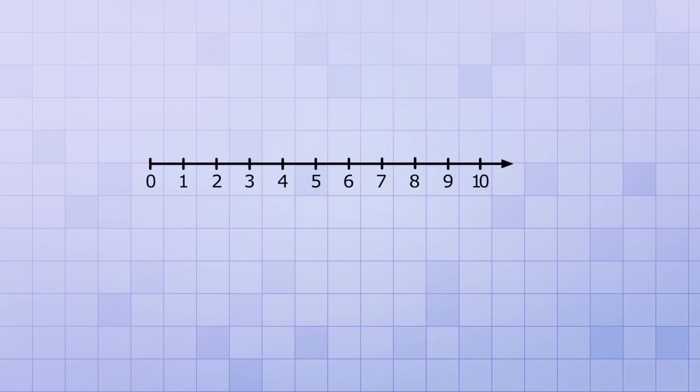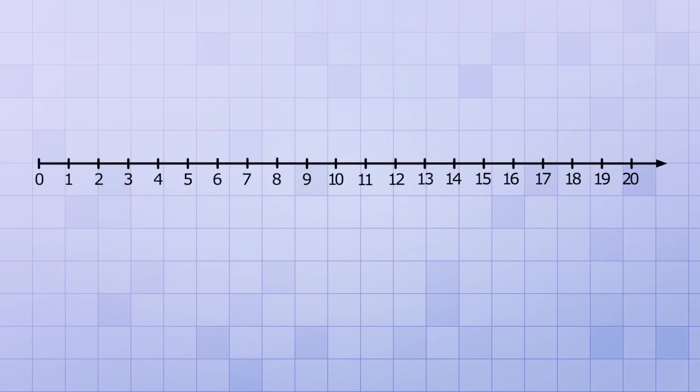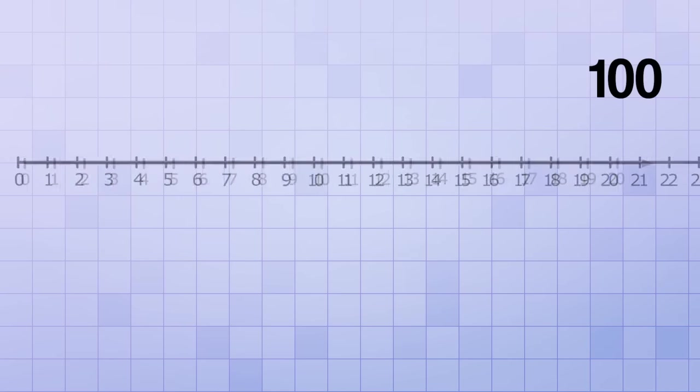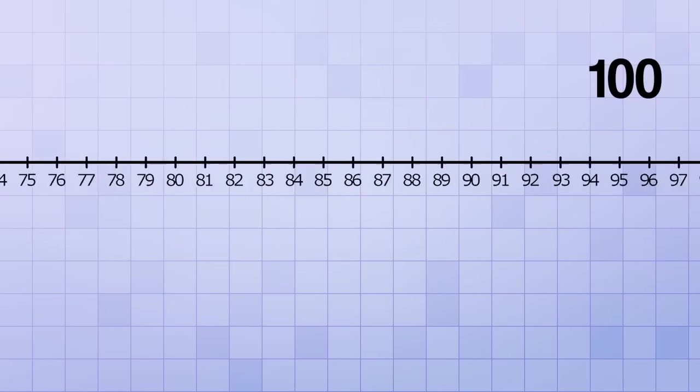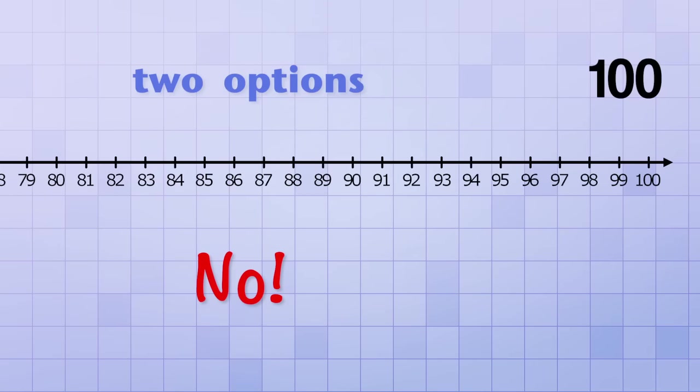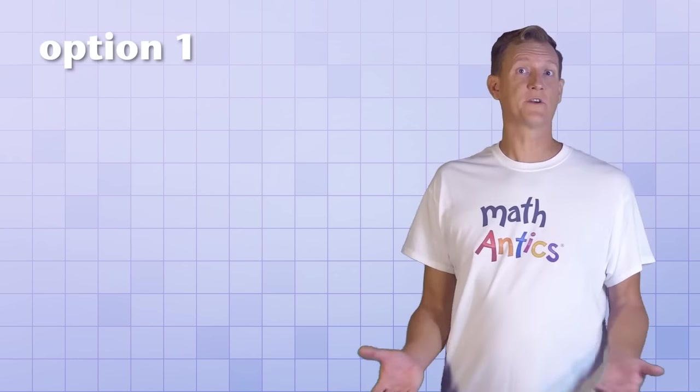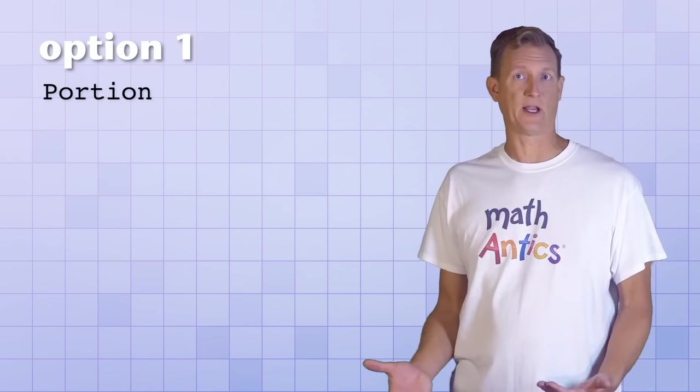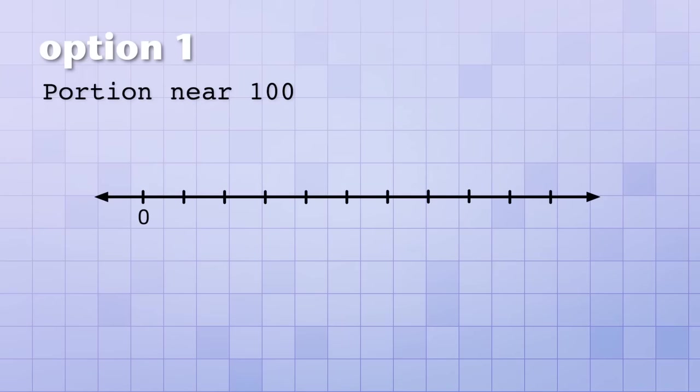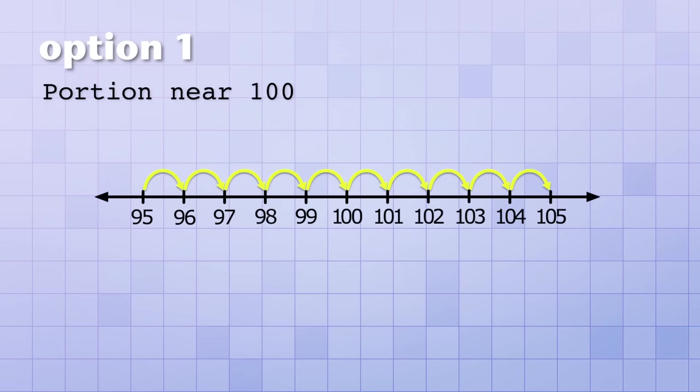For example, instead of a number line that stops at 10, maybe we need one that goes all the way to 20. That wouldn't be too hard to draw. But what if we needed to go all the way to 100? Would we need to draw a number line that shows all the numbers from 0 to 100? Fortunately, no. We actually have two different options that are much easier. The first option would work for situations where we only need to use a portion of the number line that's near 100. In that case, instead of starting our number line at 0, we could have it start at a bigger number, like 95, and increase by 1 until we get to 105 or so. All the marks are still 1 apart like the other number lines we've seen. We're just starting and stopping at different values. Notice that we have arrows on both sides now to show that the line keeps on going in either direction.